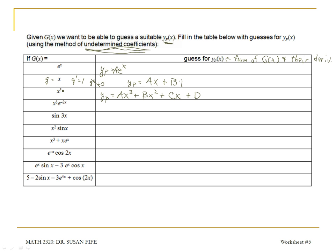Notice that when you take the derivative of x cubed, the first derivative is 3x squared. We don't need to include the 3 because we're only looking at the form of that answer — x squared — and the coefficient B will incorporate that 3. The same thing applies if you have e to the negative 2x: the negative 2 will come down and become part of the coefficient.